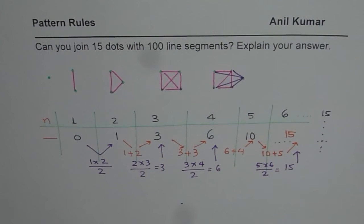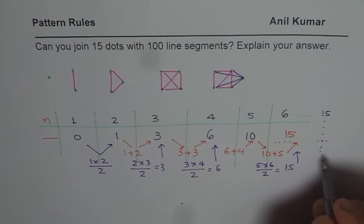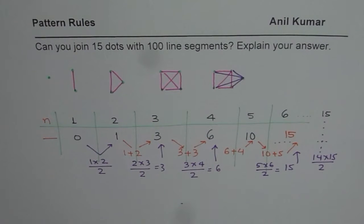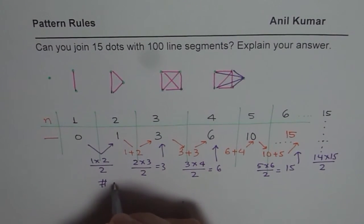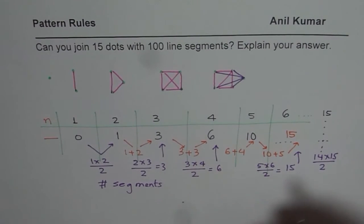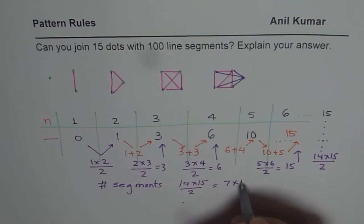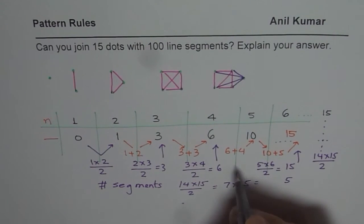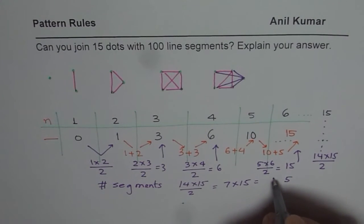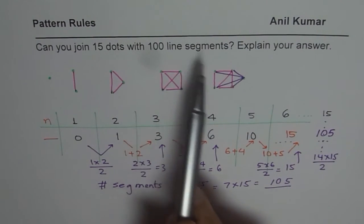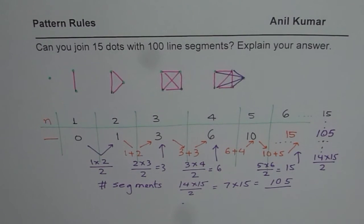For 15 dots, I should do 14 times 15 divided by 2. Dividing 14 by 2 gives 7, then 7 times 15: seven times five is 35, seven times ten is 70, so that's 105. For 15 dots I need 105 segments. So 100 line segments will not work — I need 105 segments to join 15 dots.